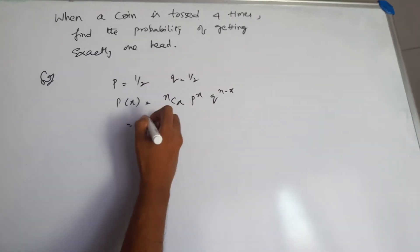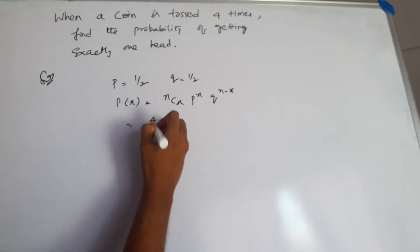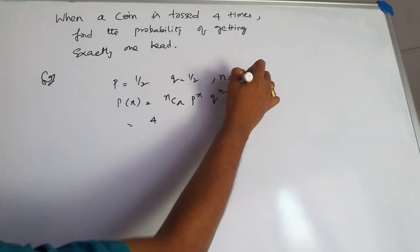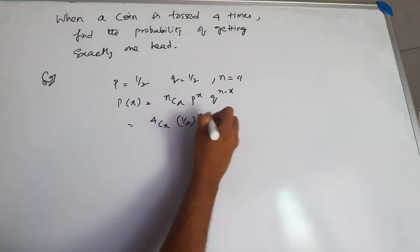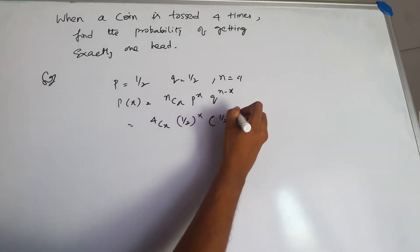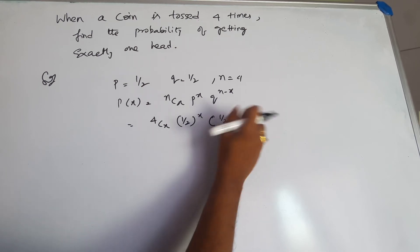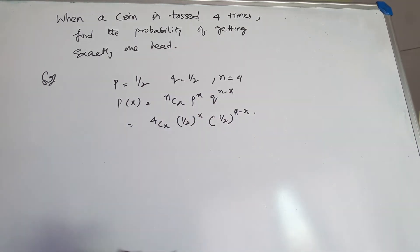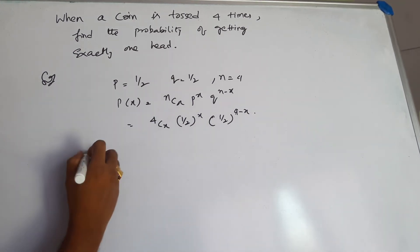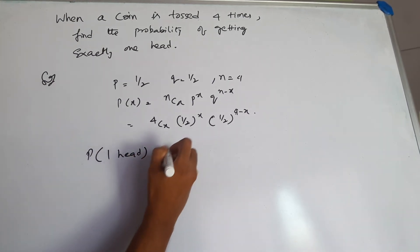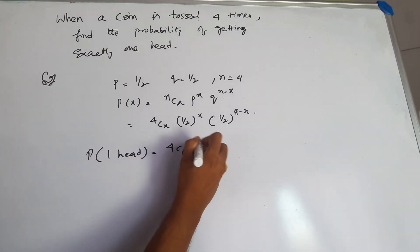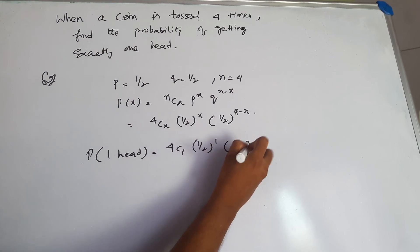We get 4 times, so n is 4. nCx, p power x, and this is half power n minus x, that is 4 minus x. Let us substitute it for probability of getting 1 head: that is 4C1 and half over 1 and half over 3.